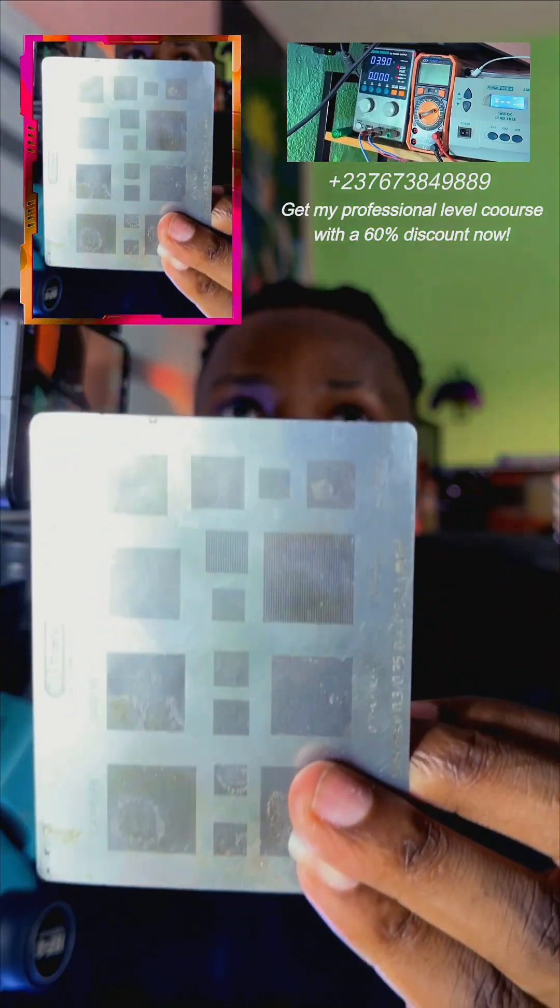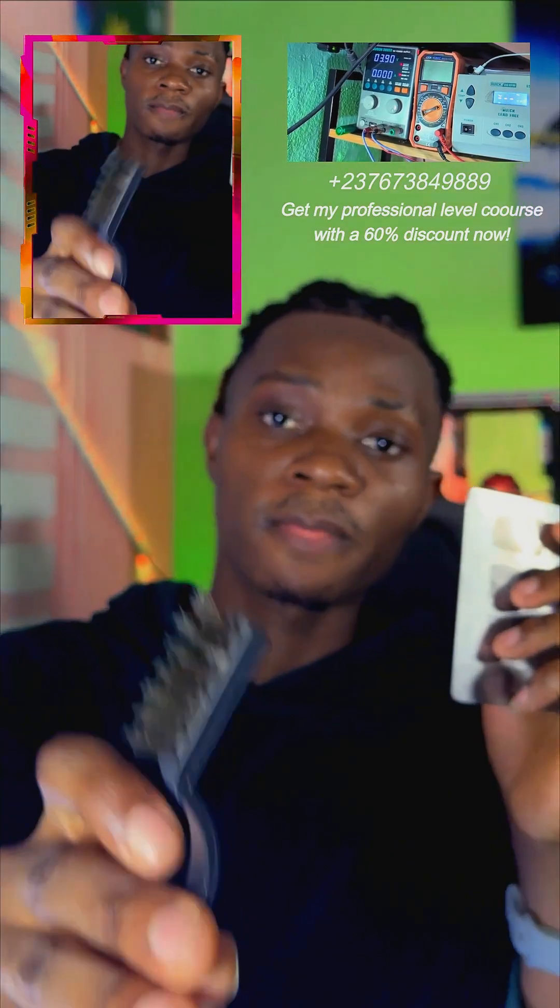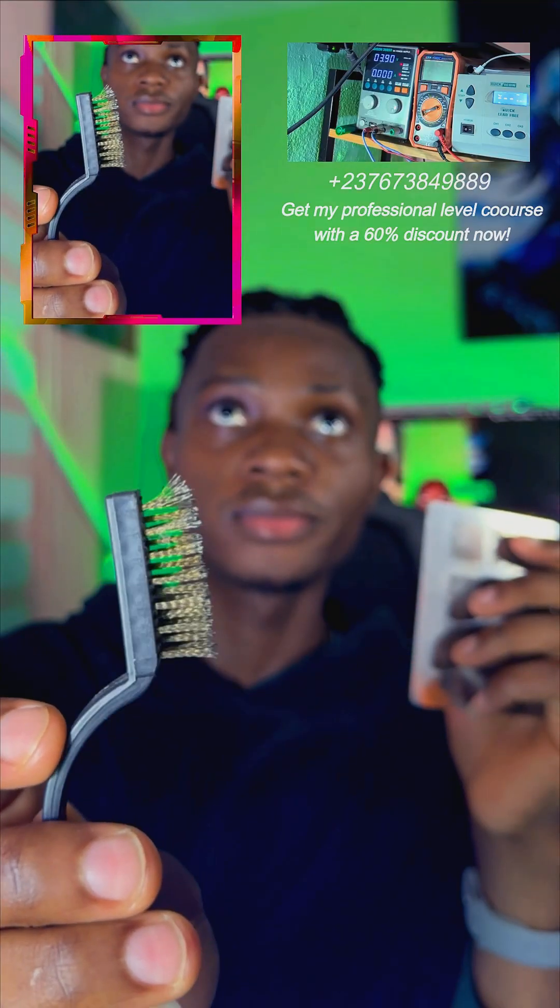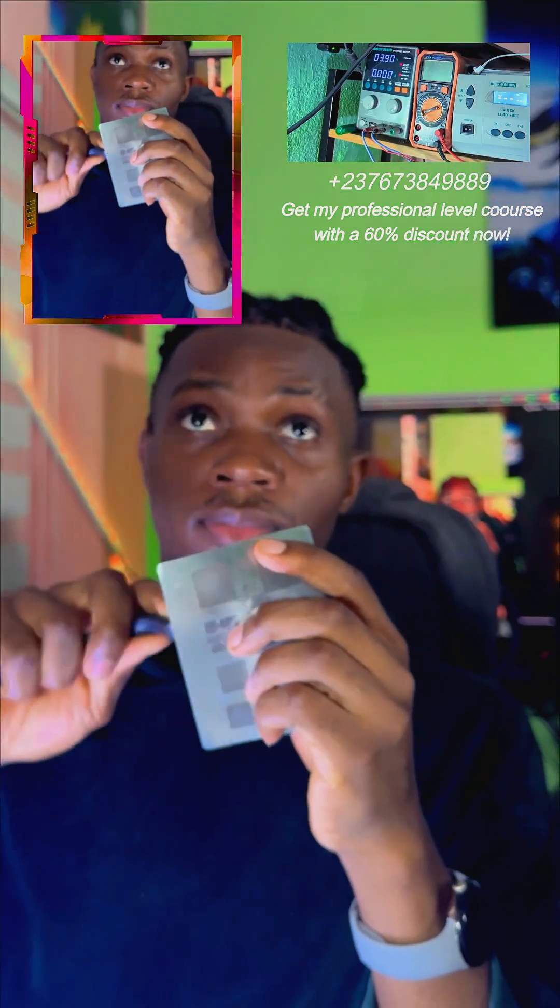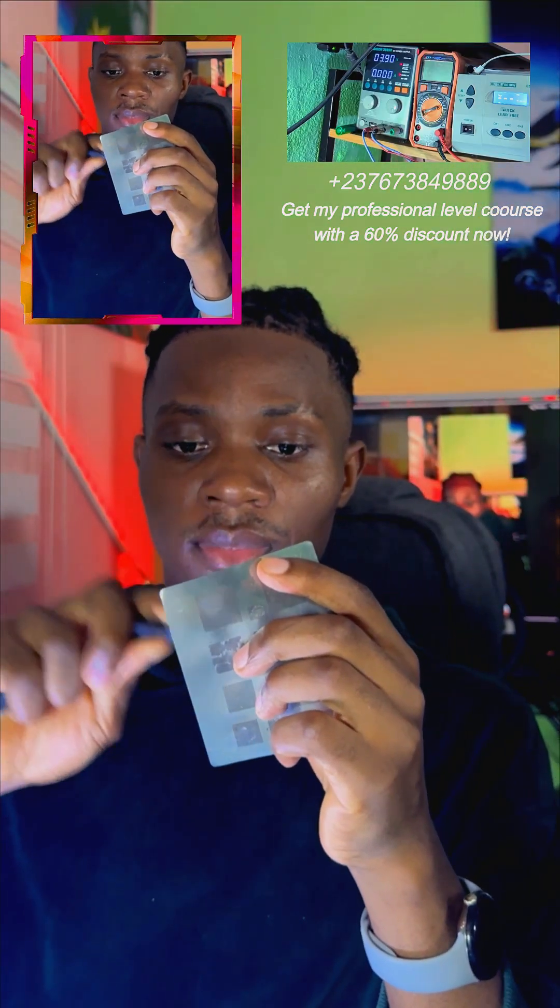You can see the stencil. I have more than 22 stencils here so the stencil was not available. And here we have a universal stencil. We are going to use the universal stencil. You can see the brush that I'm using to clean the universal stencil. Then we clean it, make sure that every hole in the stencil is clear.